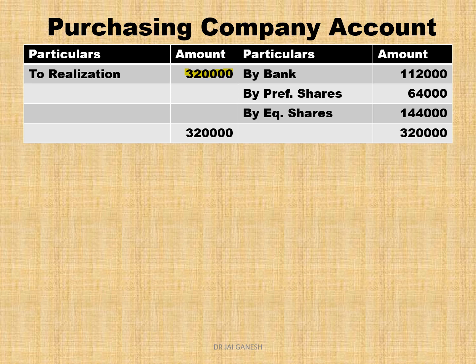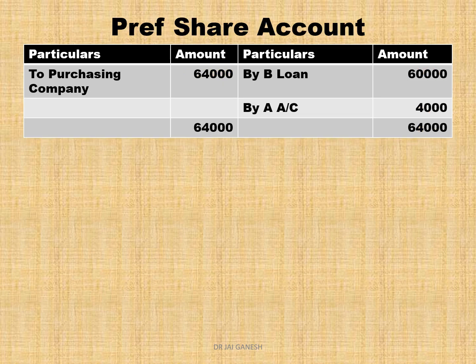If Rs. 3,20,000 is paid — partly cash Rs. 1,12,000, partly preference shares Rs. 64,000, partly equity Rs. 1,44,000 — this is the preference shares account. The company pays preference shares of Rs. 64,000, so we write 'To Purchasing Company Rs. 64,000' on the debit side. Out of Rs. 64,000, Rs. 60,000 is given to B's loan and the remaining Rs. 4,000 is given to A. This is the preference shares account.